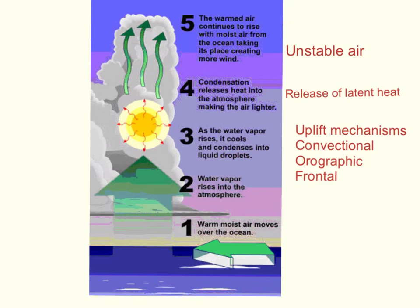That process of condensation does something really important. There's something called latent heat, which is the heat that effectively keeps the water vapour as a gas until it cools down enough to form a liquid. Once it has formed a liquid, that heat is released into the atmosphere, allowing the air to continue rising. This creates what's called unstable air — this release of latent heat is connected to the creation of unstable air, which will continue rising up into the atmosphere. That's important in a tropical storm because it creates the very high vertical extent.